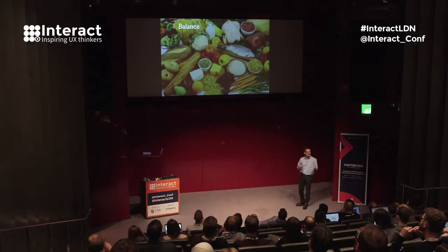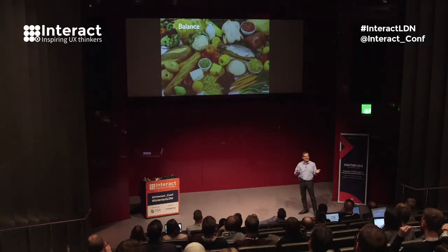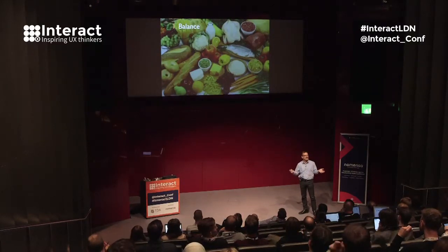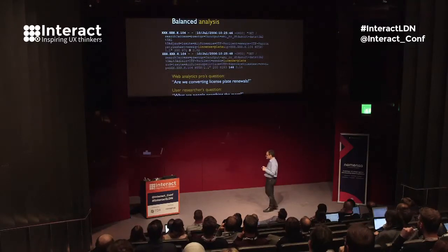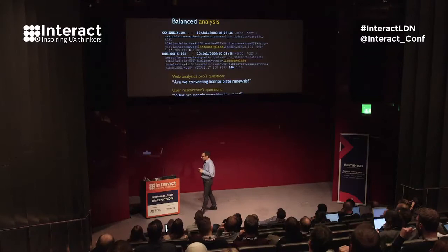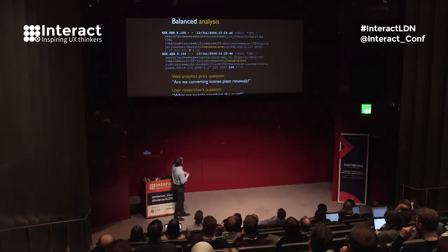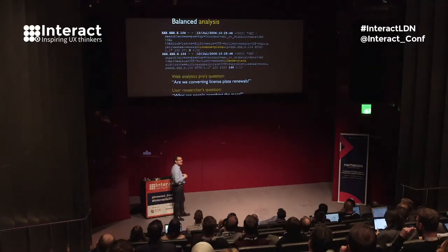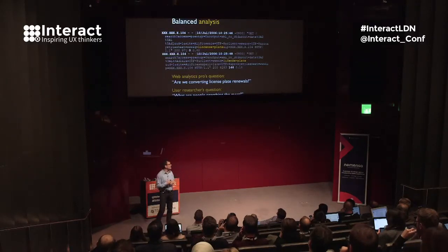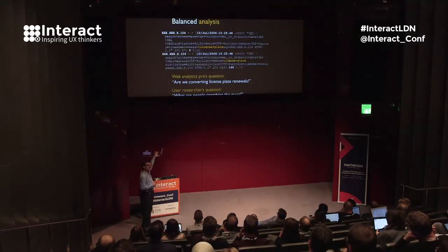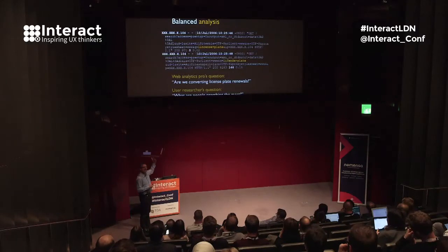Let's start with balance. Whether you're a user researcher or someone who works with user researchers, you're dealing with data, methods, tools, and a practice. If we're trying to analyze the data we pull together, it really helps to take a balanced approach — getting different brains to look at the same data and learn different things, then talk with each other. Here's a tiny snippet of a search log from the Washington State website, where people search for things like how to renew their driver's license.